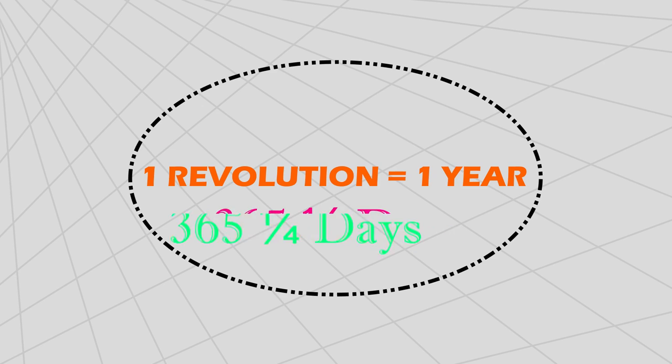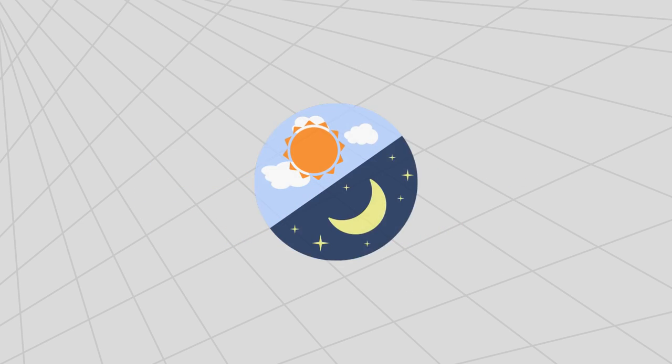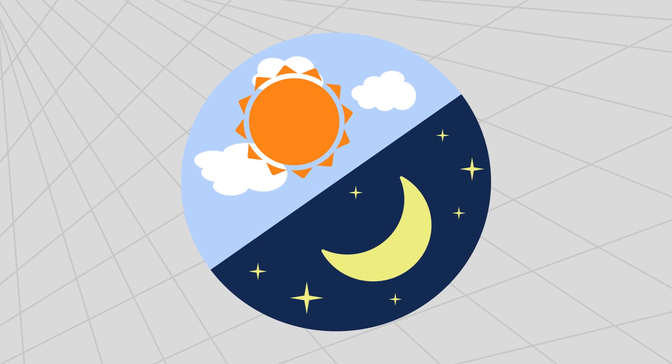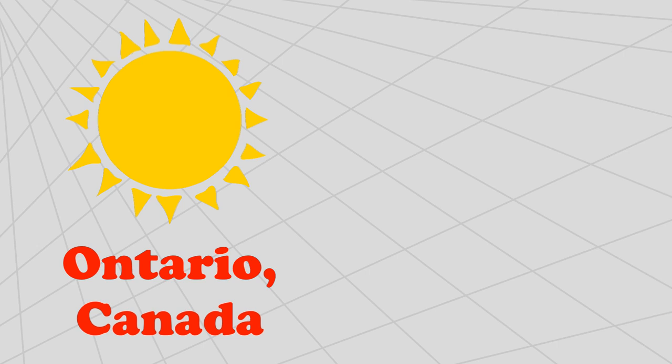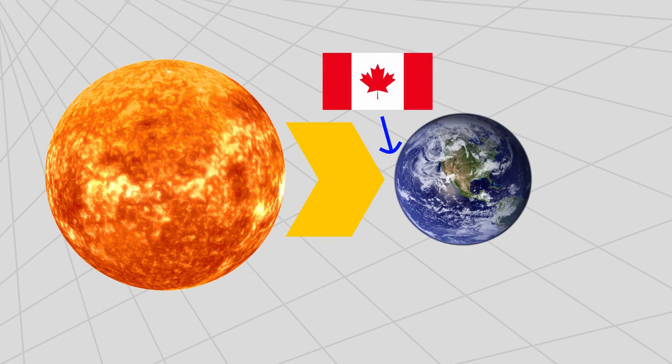The reason why we have day and night is because different parts of the Earth are facing the Sun during different times of the day. Here's an example: when it is daytime in Ontario, Canada, it is nighttime in Berlin, Germany. Canada is currently on the side of the Earth that is facing the Sun during its rotation. Germany is on the other side of the Earth that is not facing the Sun at the moment.